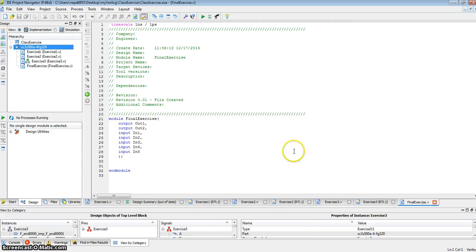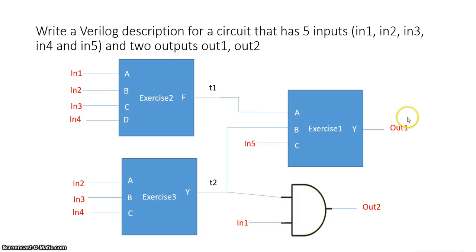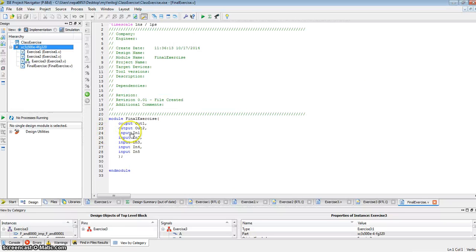So I have a rough skeleton of my final exercise with two outputs, out1, out2, and five inputs, in1, in2, in3, in4, in5.